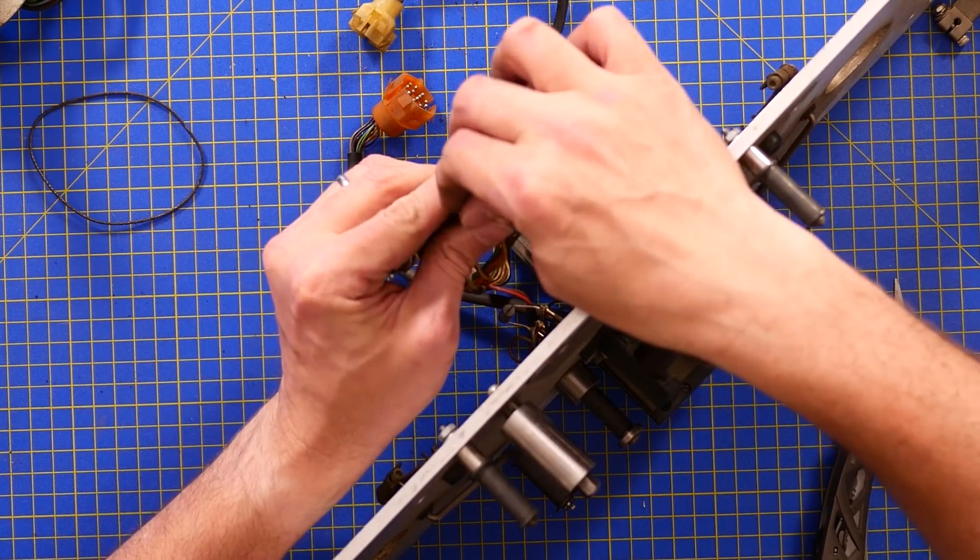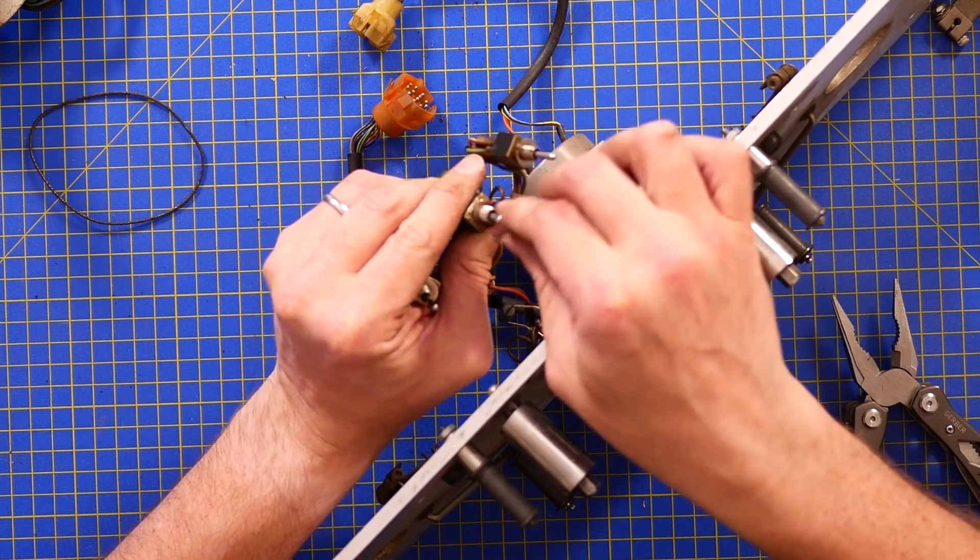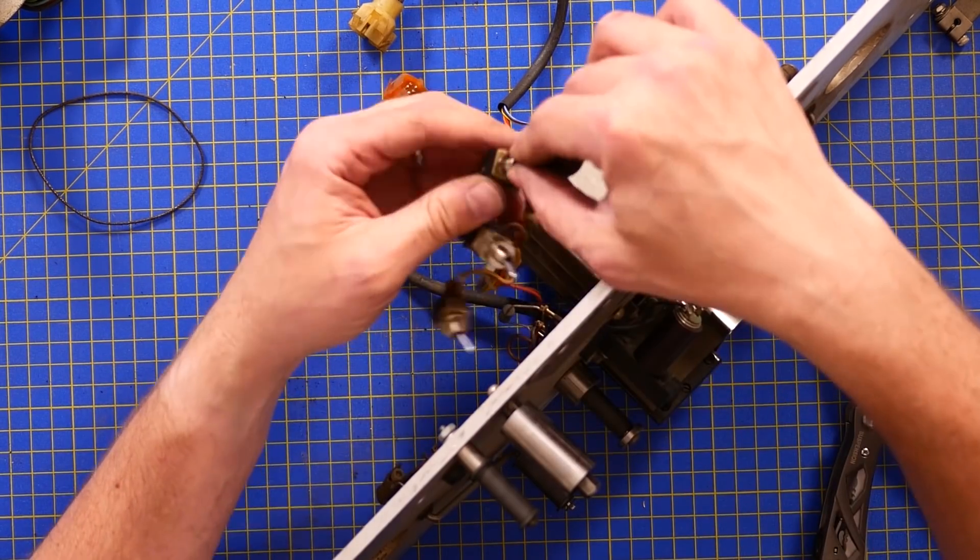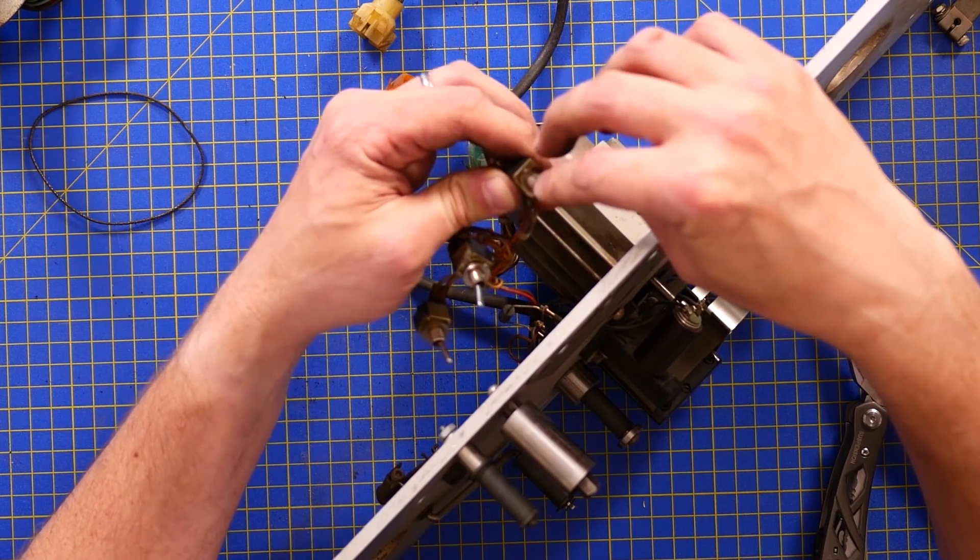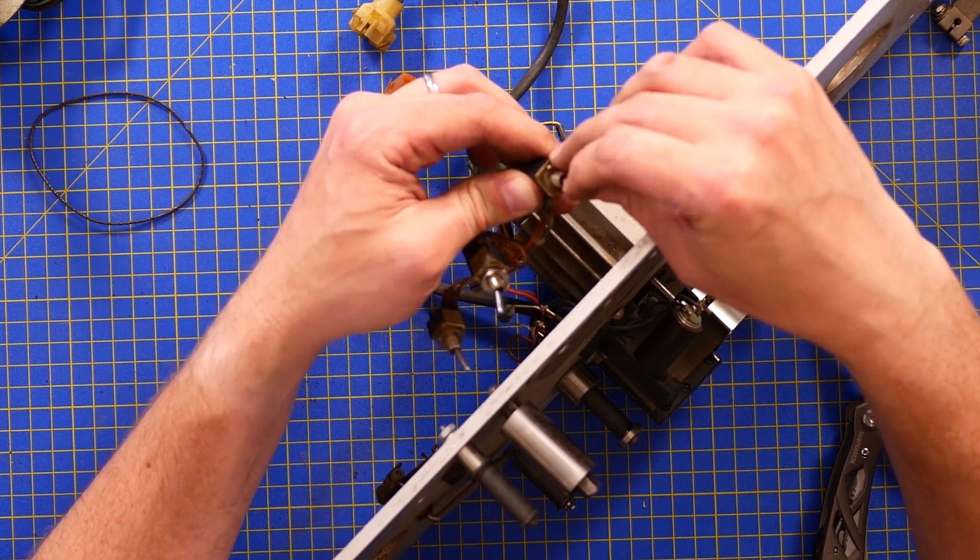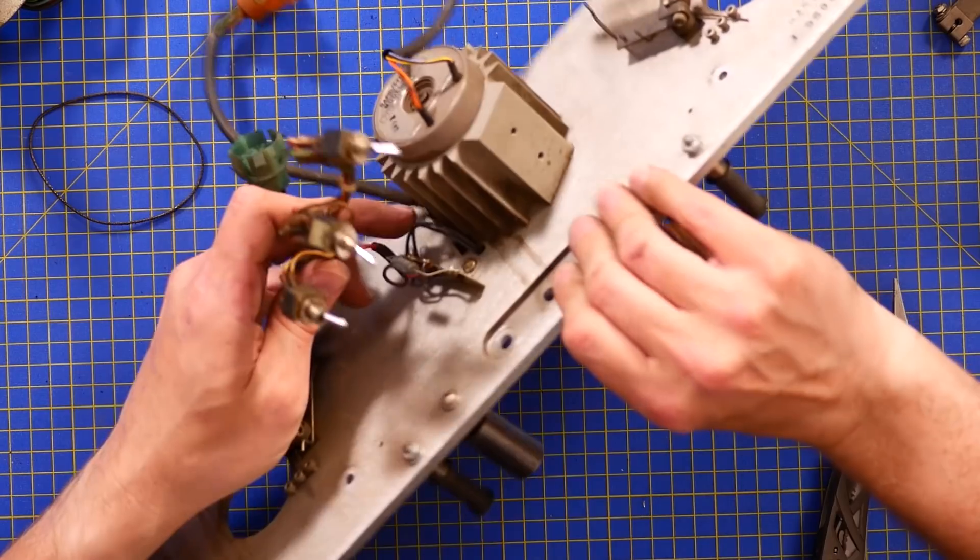The faster it spins, the higher the voltage it generates. So that's analog feedback on the speed of the motor. We've got a forward and back direction. And we've got loop, spool, load, three position switches.